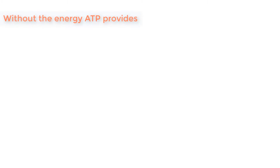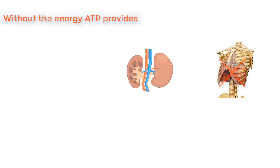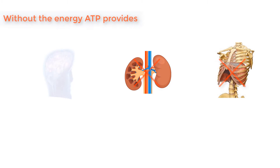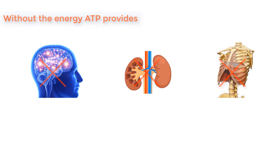Without the energy ATP provides, cells of the diaphragm could not contract to stimulate breathing, kidney cells could not reabsorb water, brain cells could not secrete neurotransmitters, and life would not be possible.